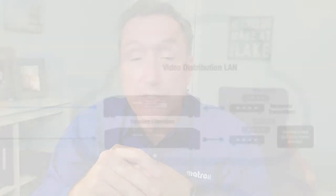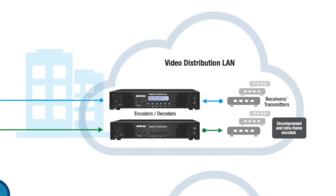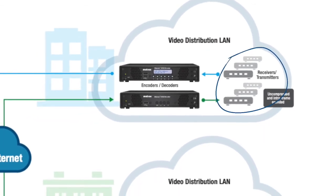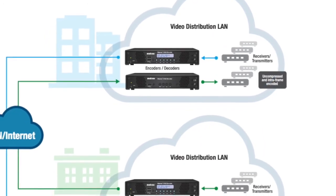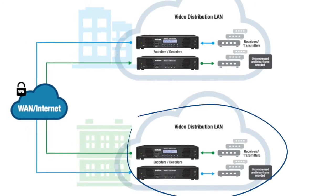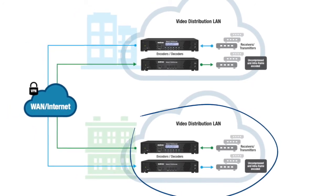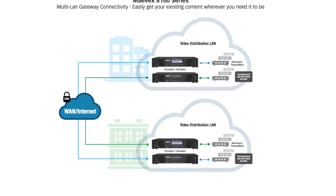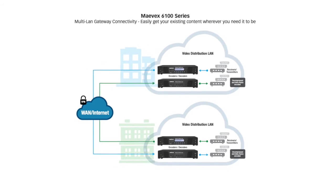There are a number of different applications for the 6152 decoder. One is a gateway application — AV over IP running on a LAN typically uses intra-frame codecs with relatively high bandwidth, making it very difficult to send that content to another LAN at a different location, whether across campus, across the city, or across the continent. Using a Mavic's encoder and decoder, you can bridge that gap with much lower bandwidth content at high quality, getting it across WANs, VPNs, and even the open internet with secure reliable transport and 256-bit encryption.